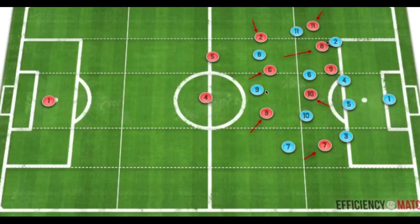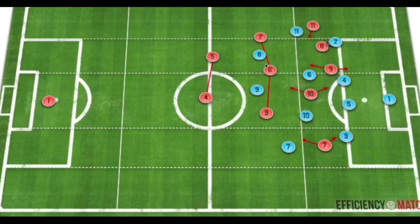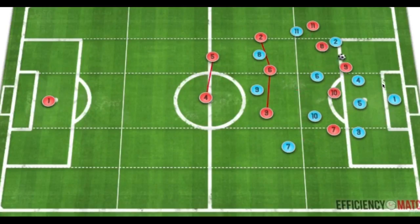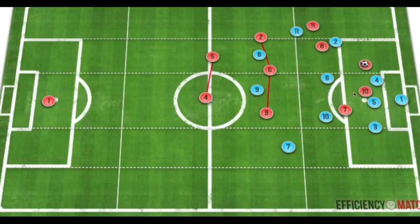Our rest defense seals off the remaining outlets through the cover shadow of the pressing player and using option orientation to close down multiple players. Our two-three rest defense remains intact but very narrow and condensed, giving us high spatial control with cover in behind. Our players occupy space between two defenders while still maintaining access to advanced spaces in behind.